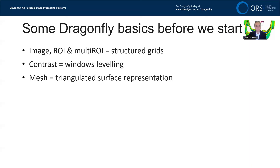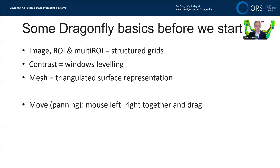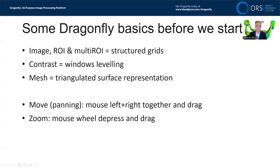Meshes are triangular surface representations. Importantly, meshes and images are totally separated — they do not automatically follow each other, as in some other software packages. If you move or translate image data, you can tell the associated mesh to do the same by right-clicking and applying the same transformation. There are also basic mouse shortcuts: pressing left and right mouse buttons together and dragging pans your image in any 2D or 3D window. Zooming involves pressing down the mouse wheel and dragging forward and backward.